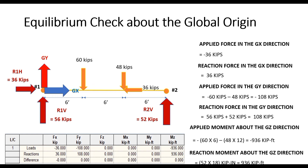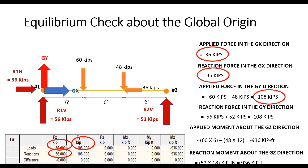Let us verify our hand-calculated values against the statics check table. Applied force in X: minus 36 kips — matches the table. Reaction force in X: plus 36 kips — matches. Applied force in Y: minus 108 kips — matches. Reaction force in Y: plus 108 kips — matches. Applied moment about Z: minus 936 kip-feet — matches. Reaction moment about Z: plus 936 kip-feet — matches. We have fully verified how the statics check table calculations are performed.